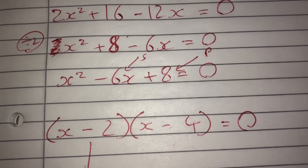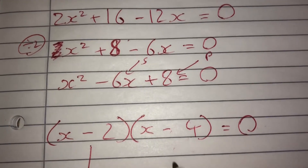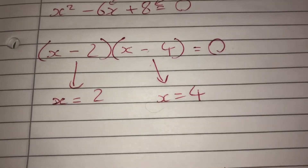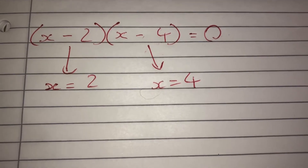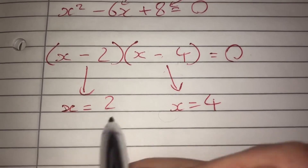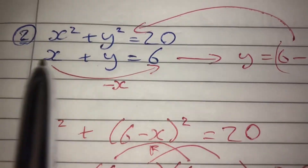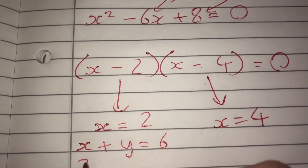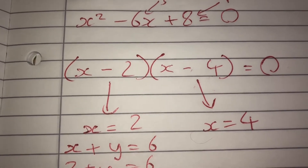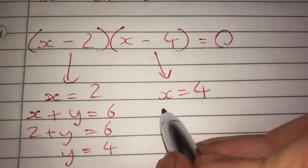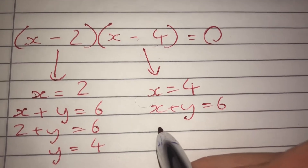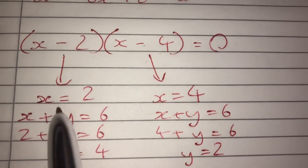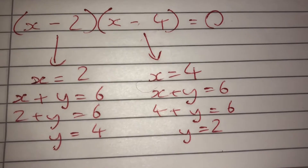The values for x are x equals 2 and x equals 4. Bear in mind this question will have quite a few marks because we'll end up with four answers — two x values and two corresponding y values. When x equals 2, substituting into x plus y equals 6 gives y equals 4. When x equals 4, substituting into x plus y equals 6 gives y equals 2, because 4 plus 2 equals 6.